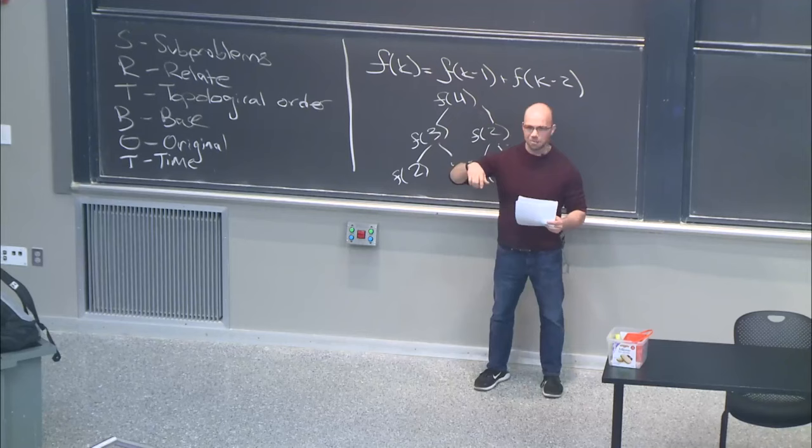The B in SORT-BOT is the base case — you need to make sure your recursion stops somewhere, just like any recursive algorithm. The O for 'original' is to go back to your original problem and make sure it corresponds to one of the function calls you've written. And the T is for analyzing your runtime. You should always analyze your runtime — that applies to pretty much everything we've done in 6006.